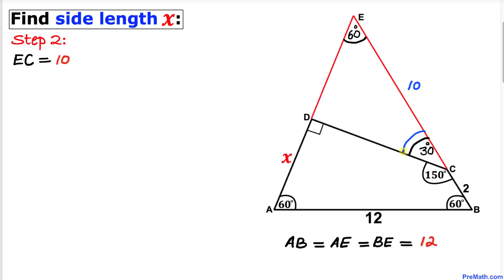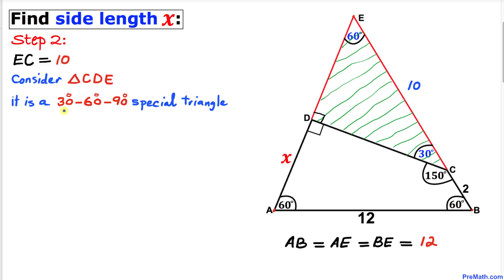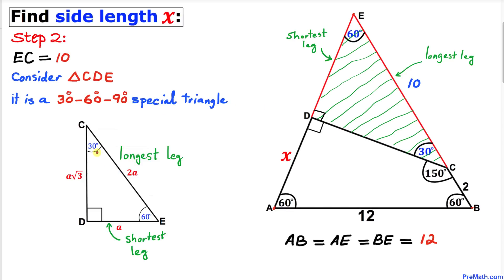Now let's focus on triangle CDE. We know that one angle is 30 degrees, one angle is 60 degrees, and one angle is 90 degrees. So this is a 30-60-90 degree special triangle. Let's recall the properties of this special triangle.